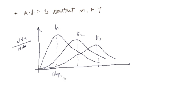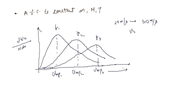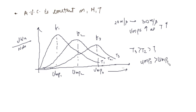The most probable speeds are UMP1, UMP2, and UMP3. As we increase the temperature, the fraction of the velocity increases — for example, if most probable velocity is 2 m/s at one temperature, increasing temperature raises it to 30 m/s. So UMP3 increases as temperature increases. We know T3 > T2 > T1, and correspondingly UMP3 > UMP2 > UMP1. The areas under all three curves are equal: Area3 = Area2 = Area1. And the peak fractions follow F1 > F2 > F3.